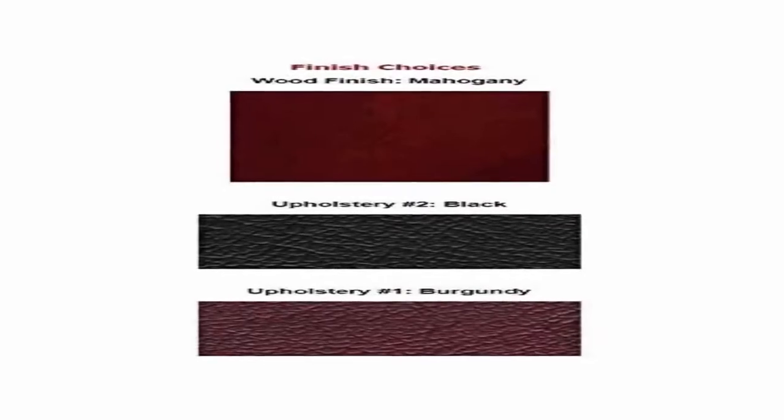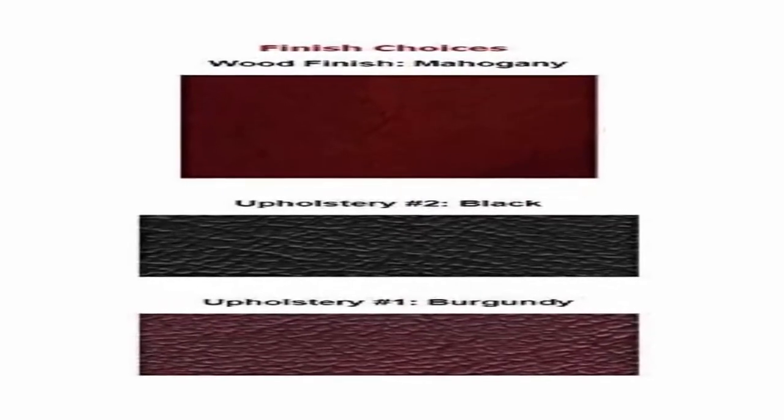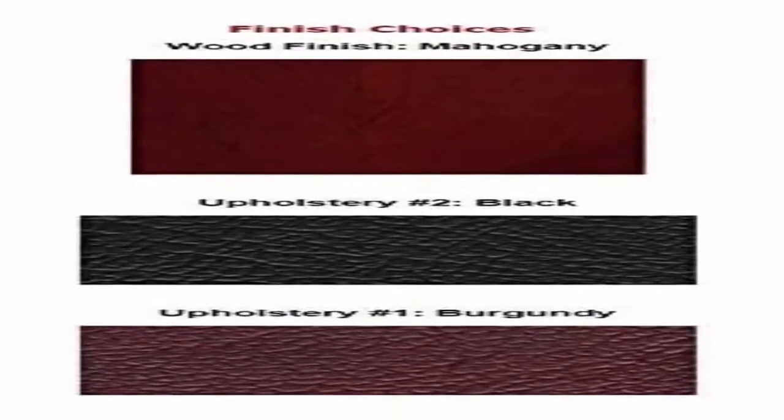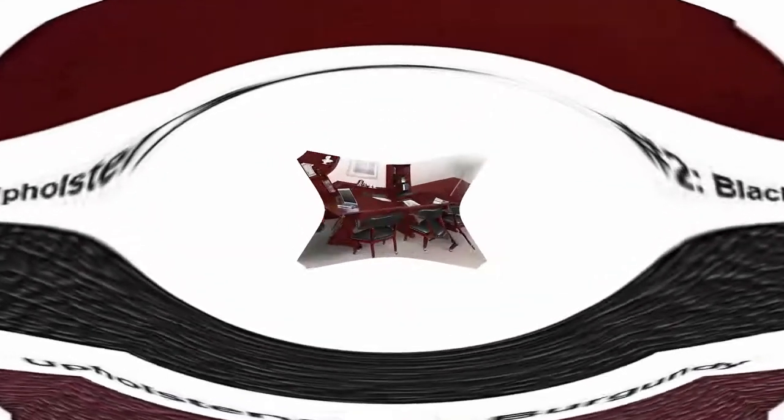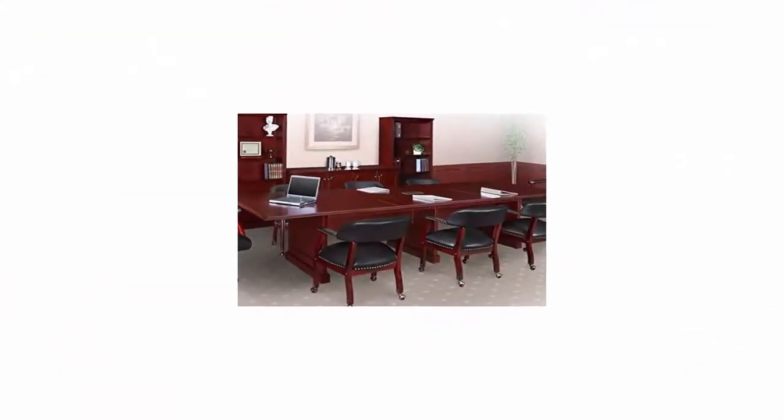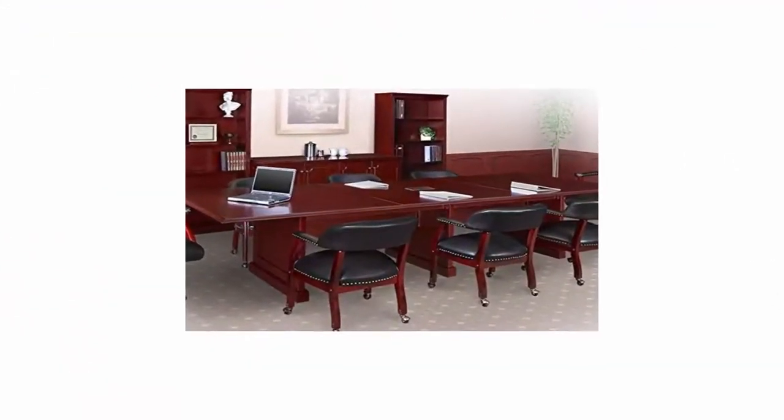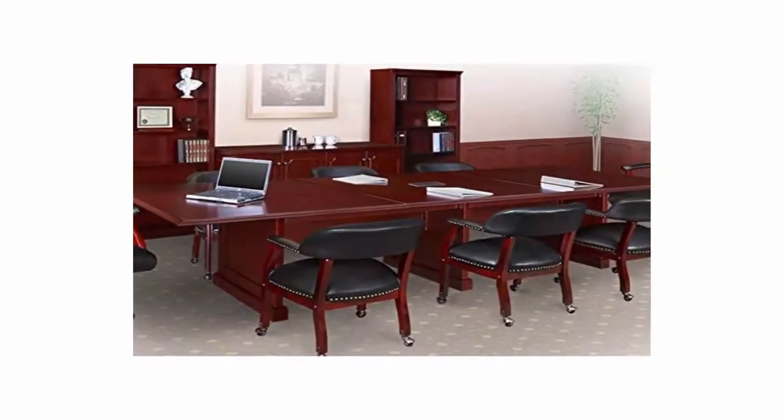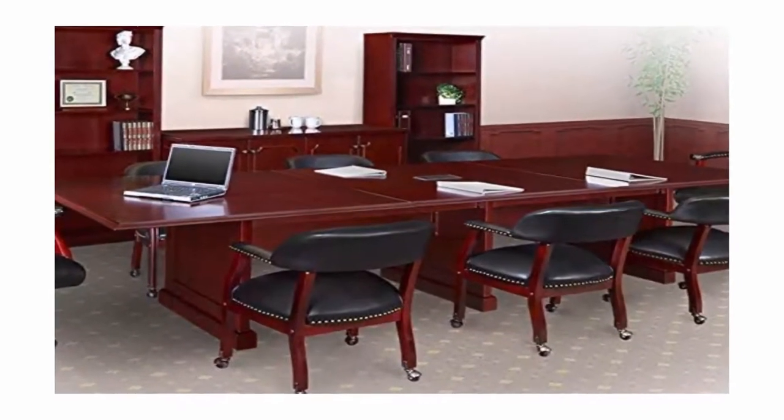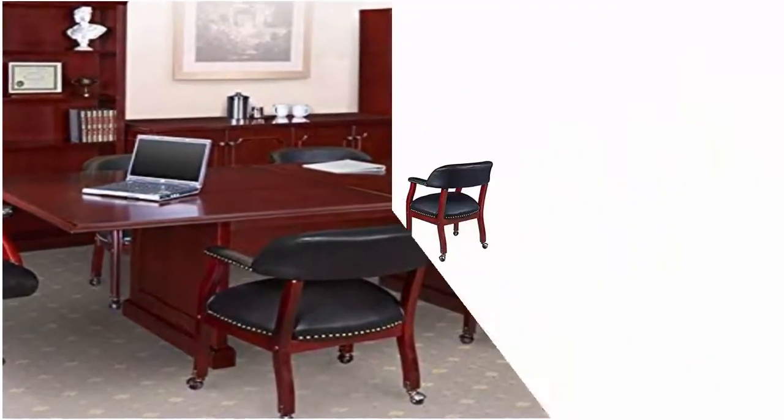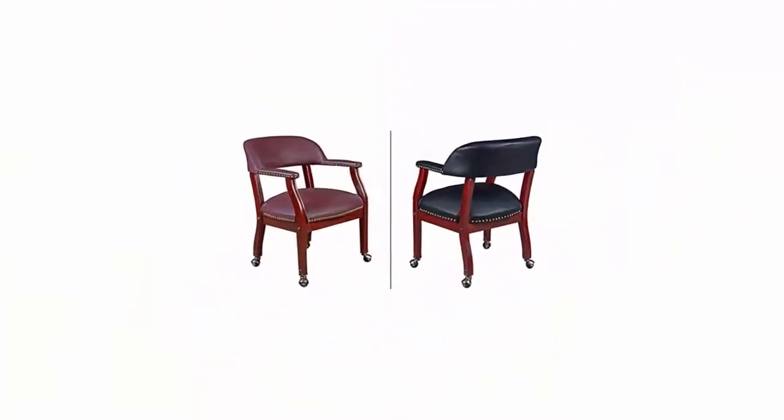Available in 8ft Table and 6 Chairs, 10ft Table and 8 Chairs, 12ft Table and 10 Chairs, 16ft Table and 14 Chairs, 20ft Table and 18 Chairs or 24ft Table and 20 Chairs. Chair Upholstery: Black or Burgundy. Wood Surfaces are Protected with High-Tech Catalyzed Lacquer for Scratch-Resistant Surfaces. Matching Pieces are Also Available.